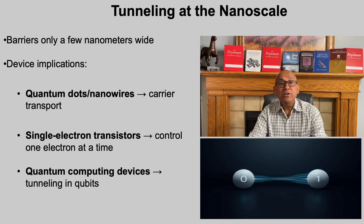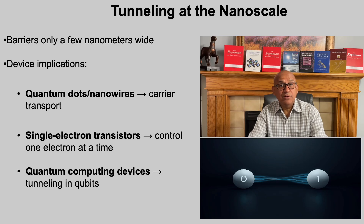So tunneling bridges the gap between abstract quantum principles and the very real technologies and natural processes that shape our world. At the nanoscale, barriers are so thin that tunneling is not rare — it is the rule. This changes how electrons move and allows devices like quantum dots, nanowires, and single electron transistors to function. Looking ahead, tunneling also plays a key role in quantum computing architectures. So tunneling becomes not just a phenomenon, but a design principle for future nanotechnology.